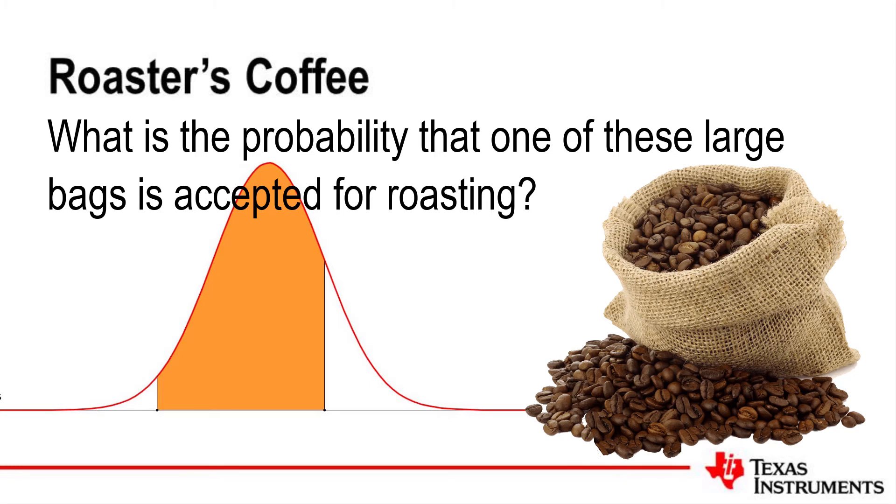This is an example of conditional probability. The beans in the bag set for retesting represent a reduced sample from our original population. The probability of selecting a bean weighing more than 0.165 grams is no longer the same. Now we are sampling from a subset of the original population.